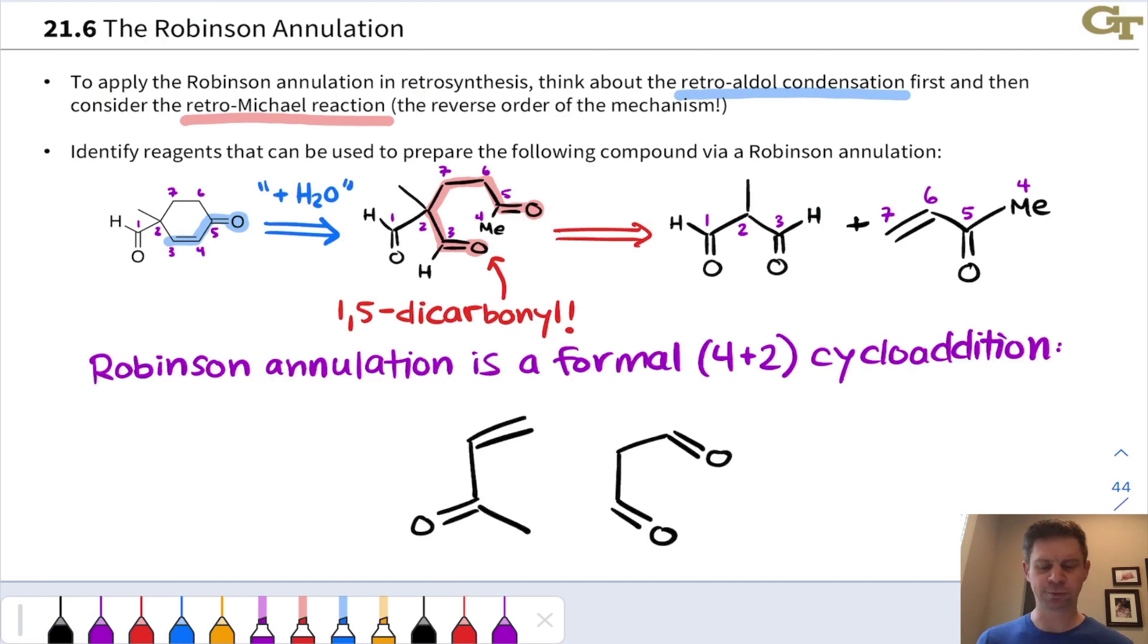Now, we noted this on the previous slide, but I want to look at it in a little more detail to help us better understand what the Robinson annulation does. This is a formal four plus two cycloaddition. It's a cycloaddition reaction that is four plus two that occurs stepwise rather than in a concerted manner like the Diels-Alder reaction, and if we think about the nucleophile and electrophile in the Michael and aldol processes, it becomes apparent why this is the case.